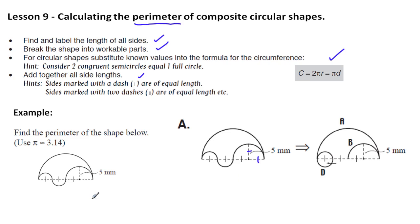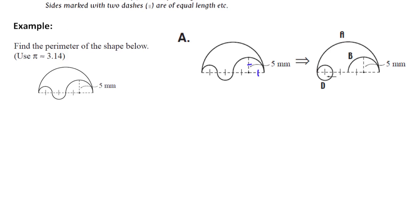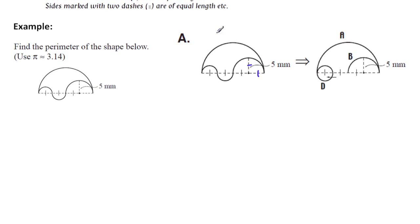Now, here's the question. Find the perimeter of the shape below. All right, now, it looks fairly complicated. So over on the right-hand side here, I've broken it down into parts that seem to be more manageable. Here's the question. And what we've actually got is a semicircle. Here it is here, a semicircle. That's A.